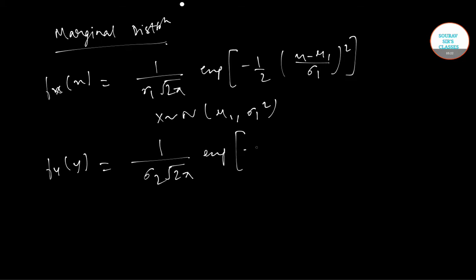Similarly, f_Y = 1/(σ_2 √(2π)) exp[-1/2 ((y-μ_2)/σ_2)²], that is Y follows normal with mean μ_2 and variance σ_2².